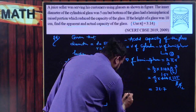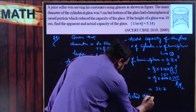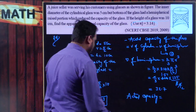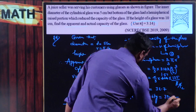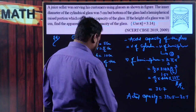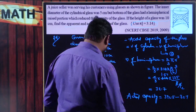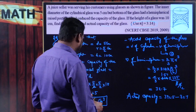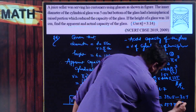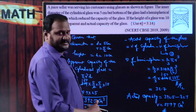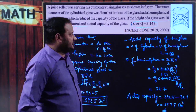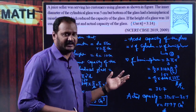Therefore, actual capacity of the juice glass equals volume of cylinder minus volume of hemisphere, which is 392.5 minus 32.7, giving 359.79 centimeter cube approximately. That is the actual volume of the glass. Hope you understand how to answer this problem. This is actually one of the value-based questions - you got this problem in 2009 as well as 2019. Hope you enjoyed this problem.